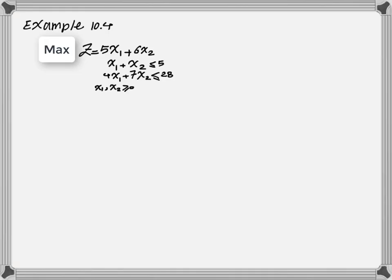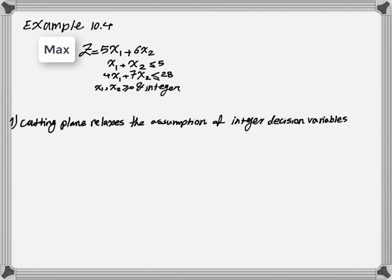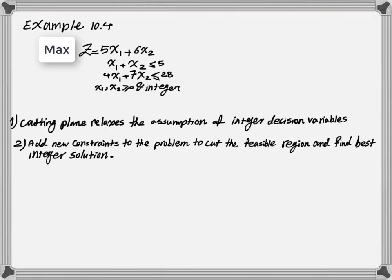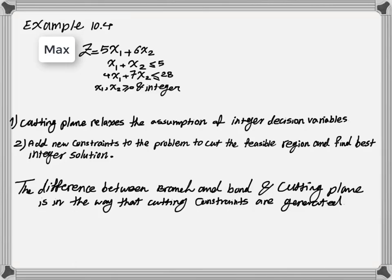An integer programming problem looks very similar to a linear programming problem with the assumption that all your x variables are also integer. To solve this using the cutting plane method, we first relax the assumption of integer decision variables and solve the problem as a simple linear programming problem. After that, we introduce new constraints called cutting constraints to cut the feasible region and find the best integer solution, similar to the branch and bound method. However, the difference is in the way the cutting constraints are generated.